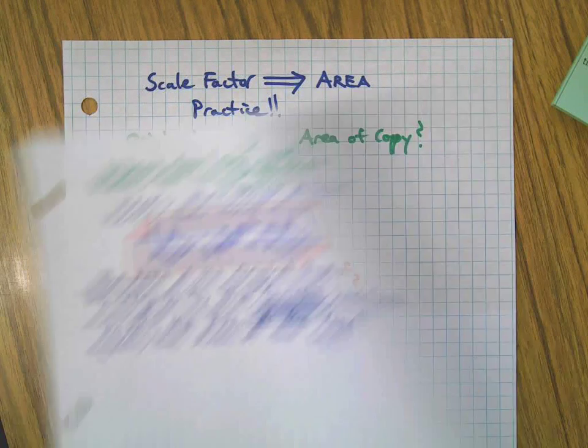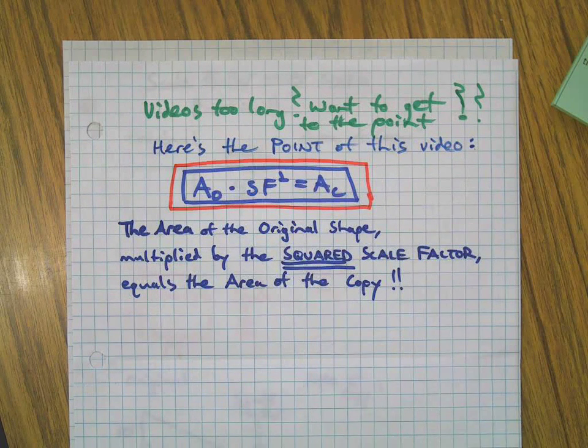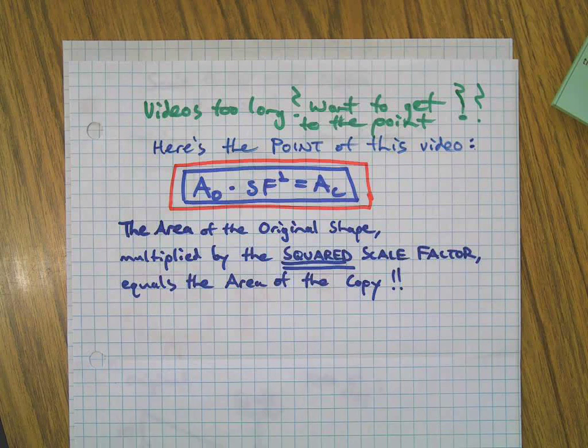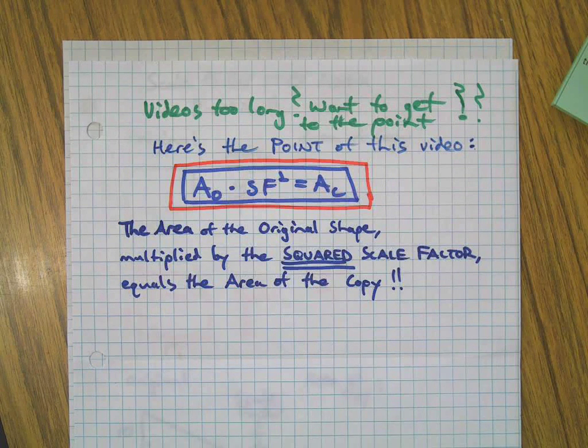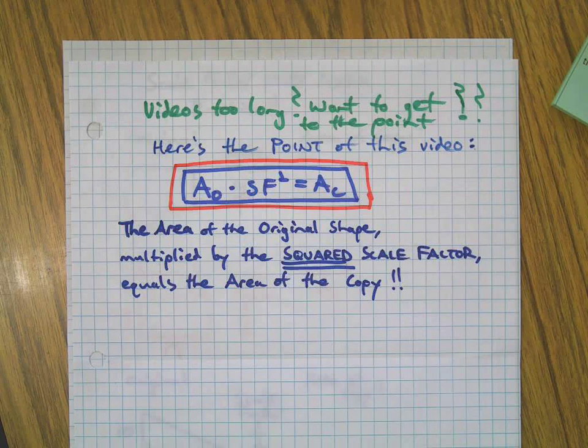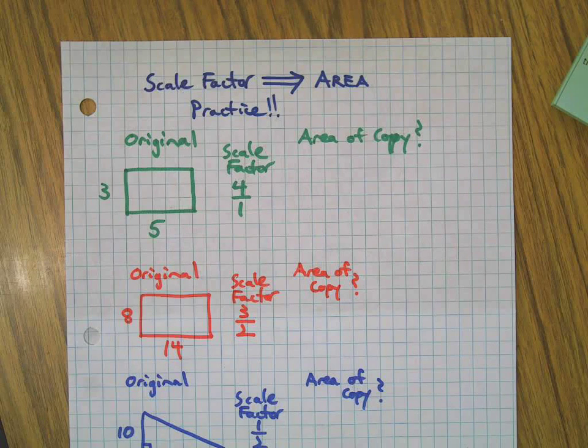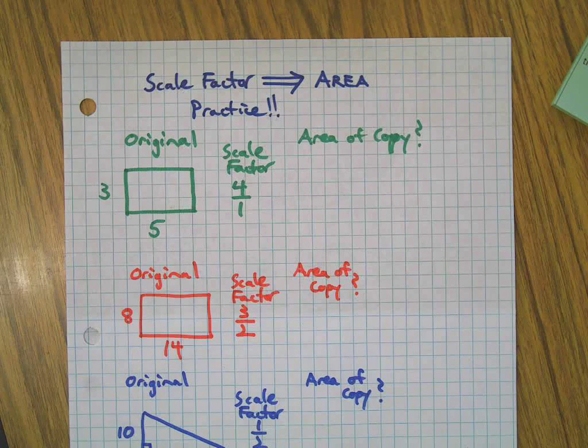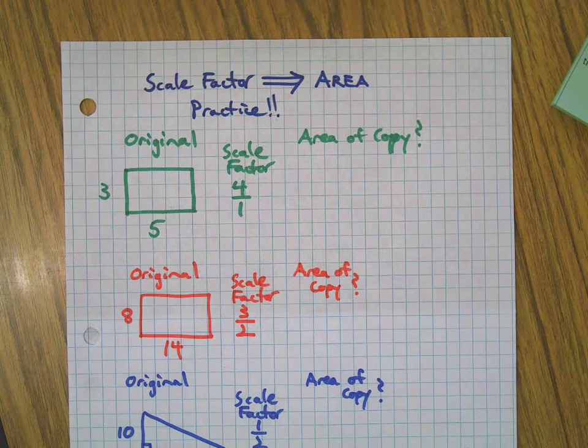Remember, the area of the original shape multiplied by the squared scale factor equals the area of the copy. Okay, that was the big deal of the last video. Now we're going to do some practice problems. Did you write that formula down? If not, back it up and write it down.